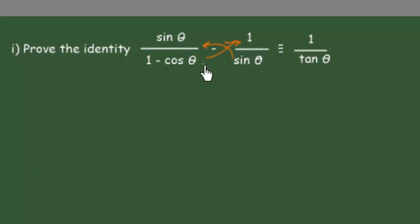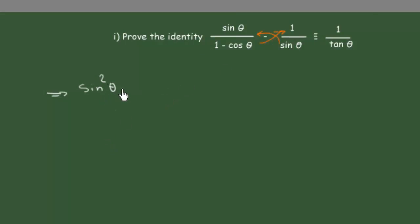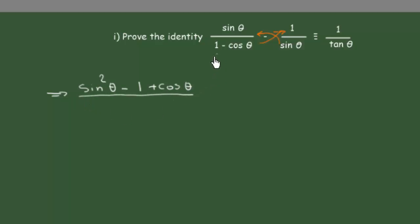To do that we will first cross multiply — as you can see from the orange arrow, sine of theta times sine of theta gives us sine squared of theta. Then minus 1 times 1 gives us minus 1, and minus cosine of theta times minus 1 gives us plus cosine of theta. The whole thing is divided by 1 minus cosine of theta times sine of theta.